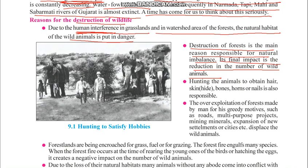The destruction of forests leads directly to a reduction in animal populations. Hunting is also a major cause — animals are killed to obtain their hair, skin, bones, horns, and nails. Although hunting is illegal in India, many people are still involved and sell these items in illegal foreign markets at very high prices.